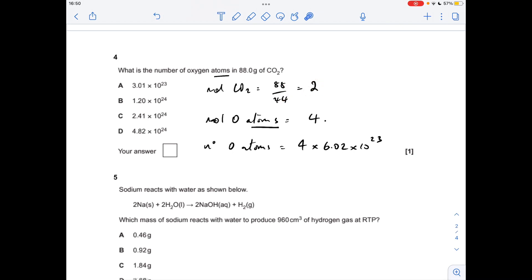So in terms of atoms, moles of atoms, you're going to have twice as many moles of oxygen atoms because there's 2 in every CO2, so that's 4. So the number of oxygen atoms is just 4 times Avogadro's number, which comes out at 2.41 times 10 to the 24, so it was option C.